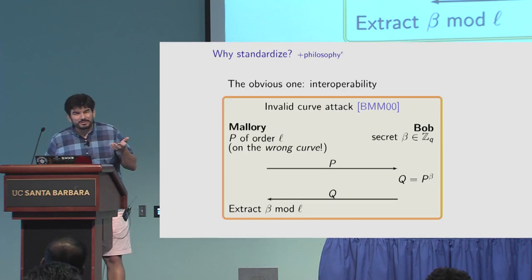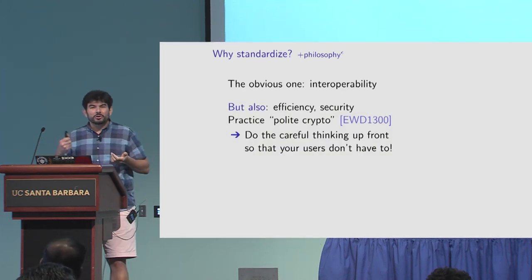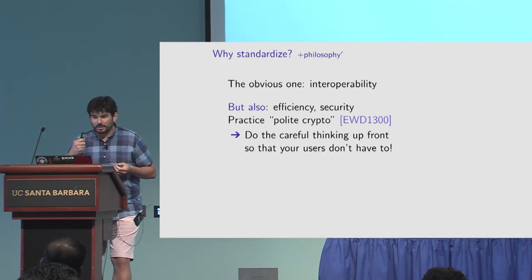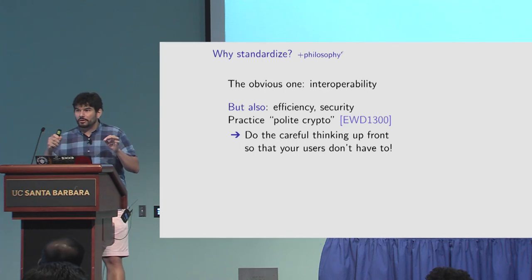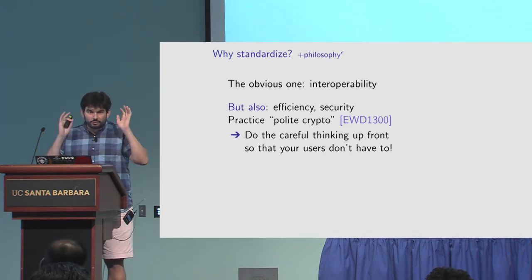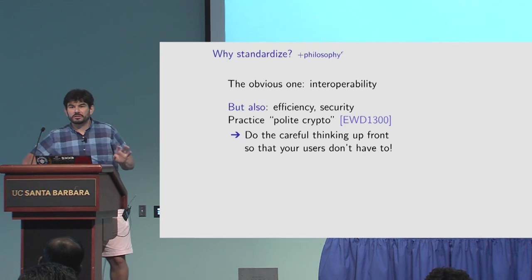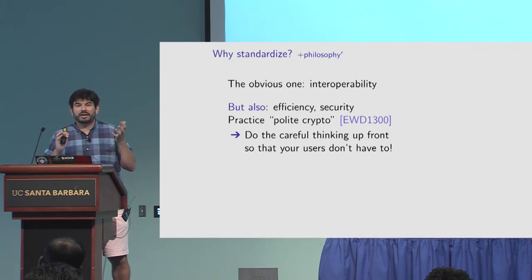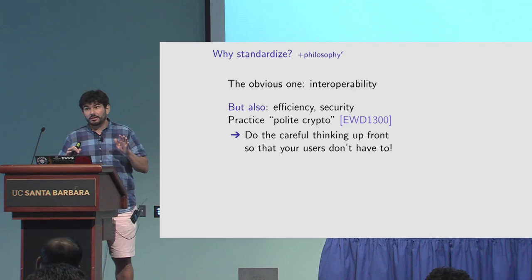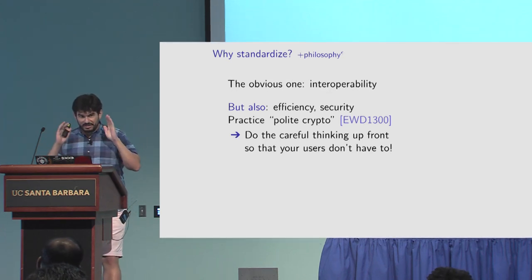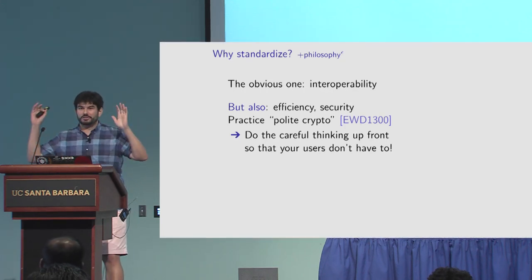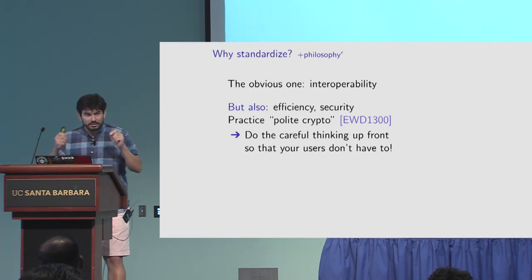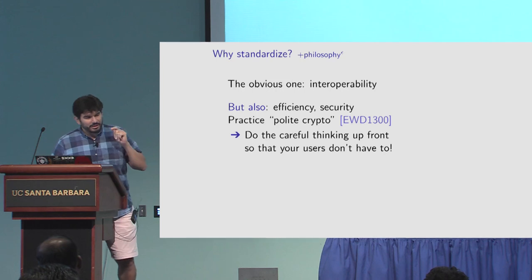This may feel like a bother, but maybe we should call it 'polite crypto' - with apologies to Dijkstra. The idea is: if I can spend an hour making sure you don't have to read the standard ten times or go off to ten other documents, or save you from writing bad software, that's definitely a worthwhile trade-off. We should regard that as an optimistic statement - of course a hundred or even a thousand people are going to read this document, so it's worthwhile to spend that hour.